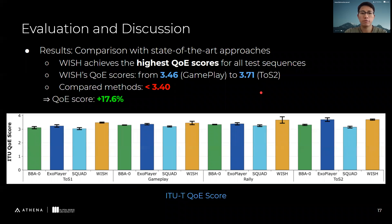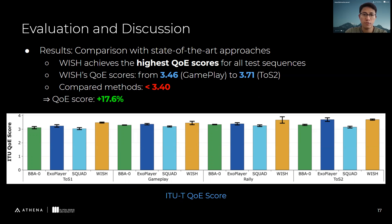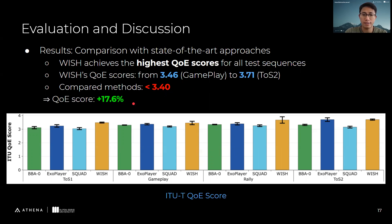For the results, first we compared the WISH performance with other state-of-the-art approaches. As we can see in these figures, WISH achieves the highest QoE score for all test sequences. WISH QoE scores are from 3.46 to 3.71, while the compared methods are less than 3.4. So we can say that the QoE score of WISH is higher than the others by up to 17.6 percent.